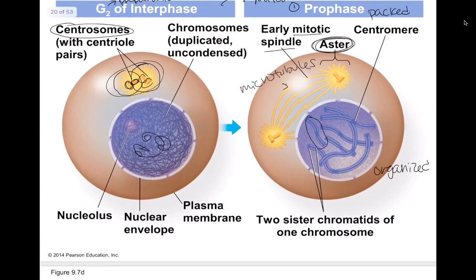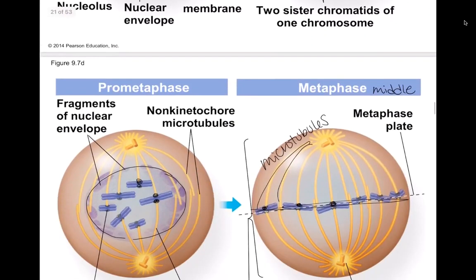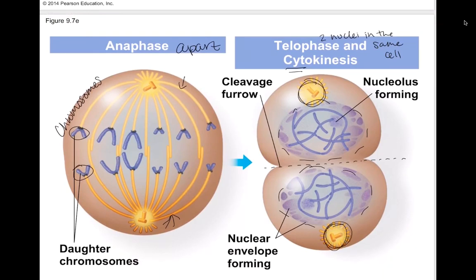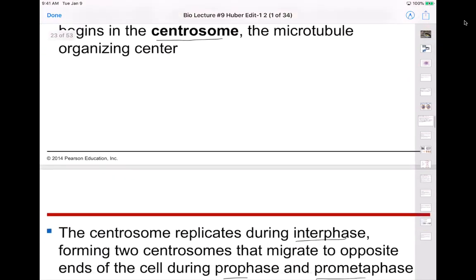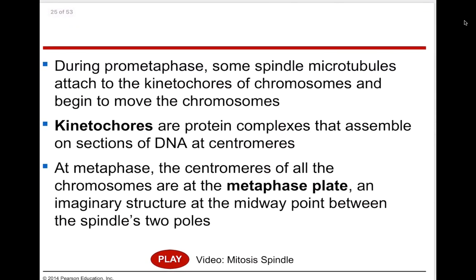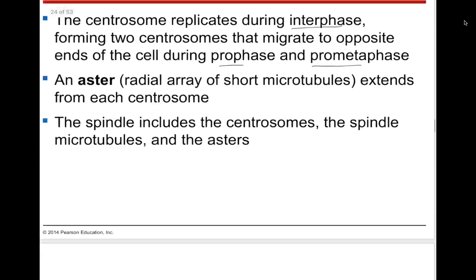During prophase and prometaphase, you can see the two centrosomes starting to separate to opposite ends of the cell. This is important because as the cell elongates, you'll have one centrosome in each new cell when they split — which is what you want since they were replicated during interphase. The spindle includes the centrosome, the spindle microtubules, and the asters. During prometaphase, some microtubules attach to kinetochores on the chromosomes and start moving them.